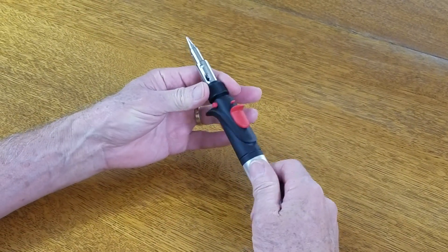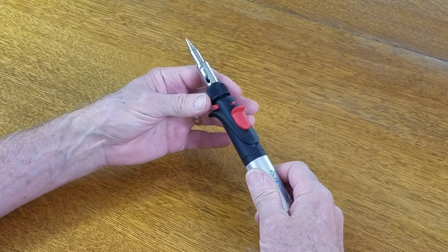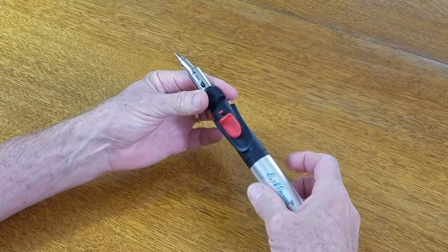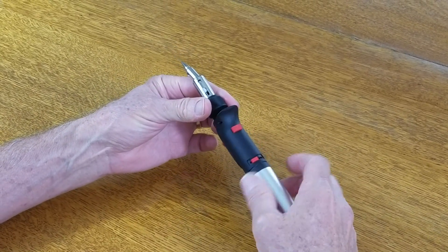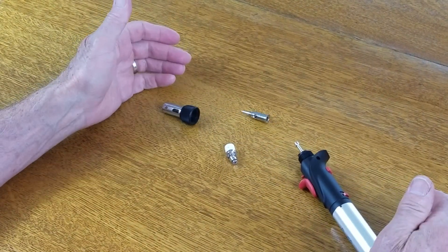I'm going to show you what happens sometimes with your butane soldering iron. Sometimes the catalyst comes loose, and when you go to change tips and take it apart, it falls apart like that.